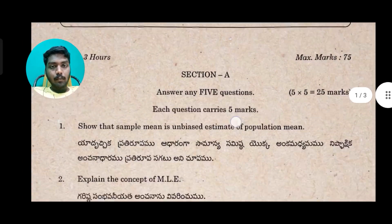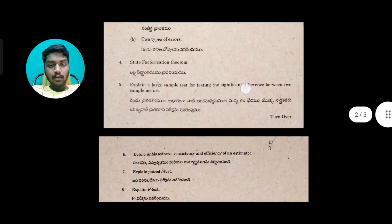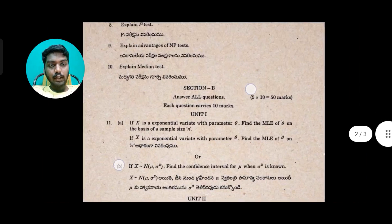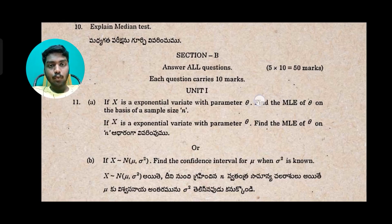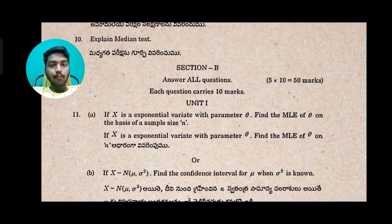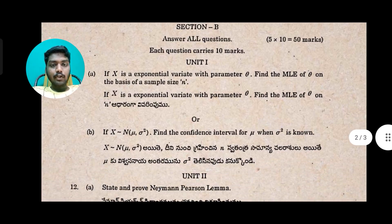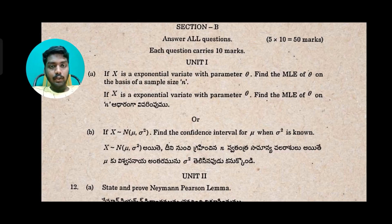From the 2018 question paper: 10 marks and 5 marks questions. From the 2019 question paper: if X is an exponential variant with parameter theta, find the MLE of theta on the basis of sample size n. Another question: if X is distributed as N(μ, σ²), find the confidence interval for μ when σ² is known.